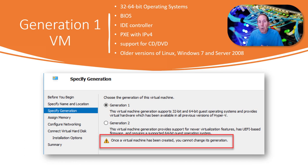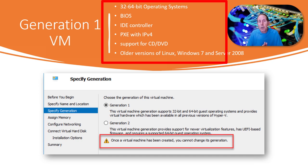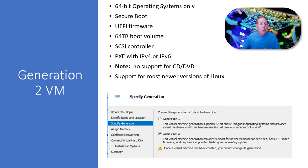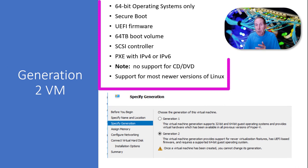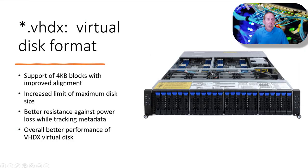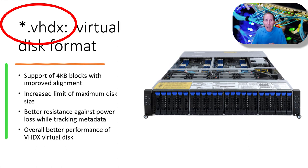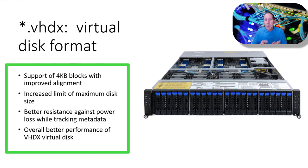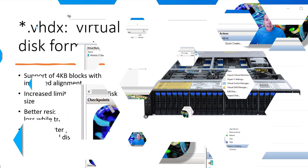Why use generation one virtual machines? They're great for 32-bit operating systems, old-style BIOS, IDE controllers, PXE boot with IP version 4 only, CD and DVDs, and older versions of Linux, Windows 7, and Server 2008. For newer operating systems, go generation two — it has Secure Boot, UEFI, 64 terabyte boot volume, SCSI controller for many hard drives, PXE with IP version 4 or 6, and support for most newer Linux versions (no CD-ROMs or DVDs). Generation two uses the VHDX virtual disk format, which supports 4K blocks, increases maximum disk size, and has better resistance against power loss and tracking metadata.